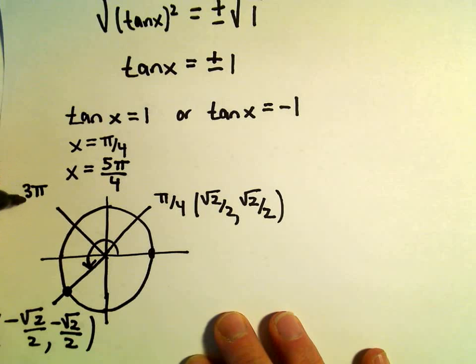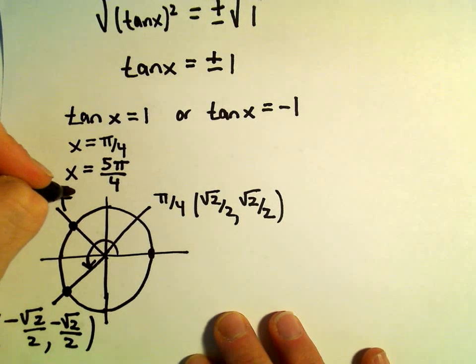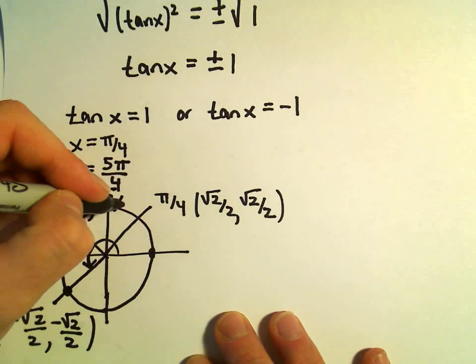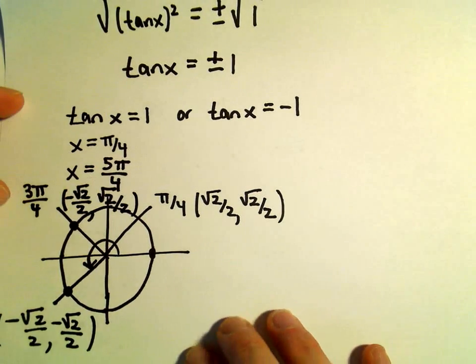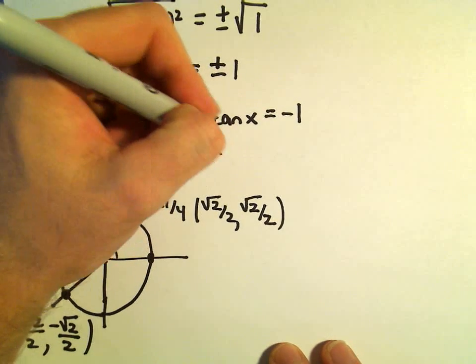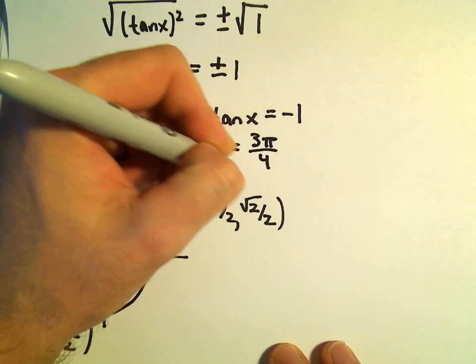So at 3 pi over 4, recall at the angle 3 pi over 4, now the x coordinate will be negative root 2 over 2. The y coordinate is positive root 2 over 2. But if we take that y coordinate over that x coordinate, we'll get negative 1. So x equals 3 pi over 4 will be a solution.